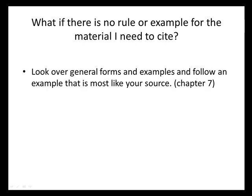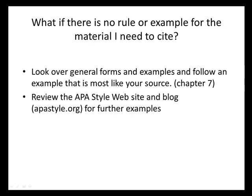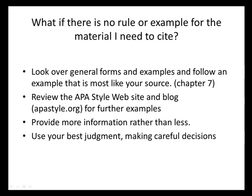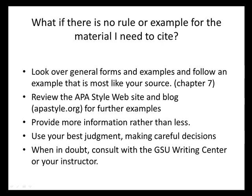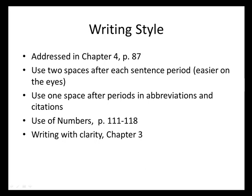If there is no rule for citing material that you need to use, use that general form and example, review the APA style website for further examples to see if someone else has cited a similar type of item, and give more information rather than less. You can also consult with the writing center. Use your best judgment, making careful decisions.